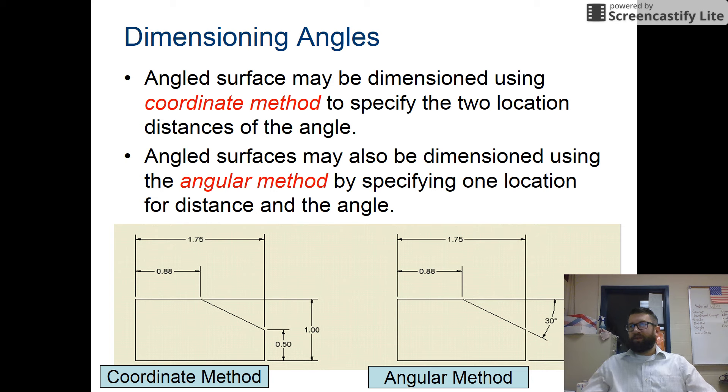An angle can be done a number of ways. You can have a coordinate method that specifies the two location distances of the angle. So here you have the first part of the angle at 0.88 across the top, second part of the angle at 0.5 along the side. You can also have a dimension using the angular method by specifying one location. So here, 0.88 would be the vertex of the angle, and then we say it's at a 30 degree angle from this horizontal down to here.